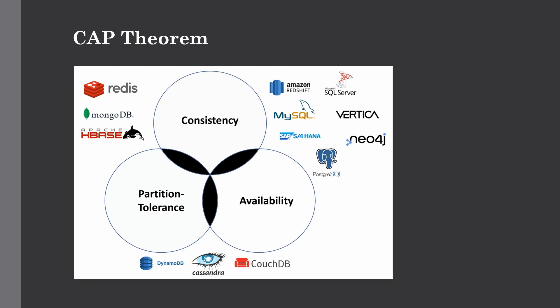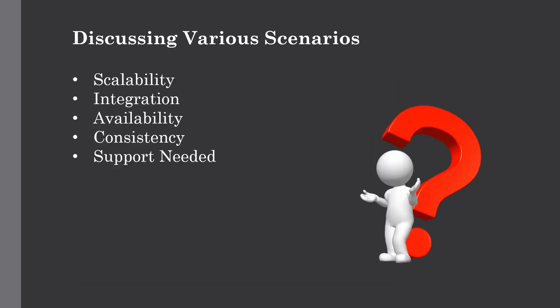CAP theorem is a very important consideration when selecting a database, but it's not fixed. For example, with Cassandra you can dial up the consistency and say you need more consistency than availability. This is not a hard and fast rule for selecting a database, but it gives you a basic idea. If you're serving big data, you need to choose two sides of the triangle — either consistency or availability.